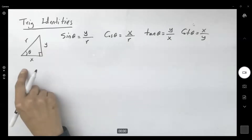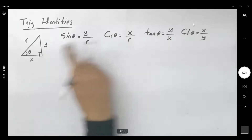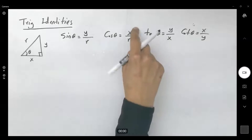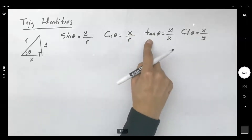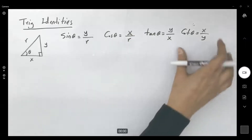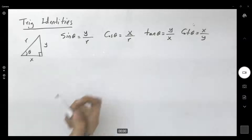We have a right triangle. Sine theta is y divided by r, cosine is x divided by r, and tangent is y over x, and cotangent is x divided by y.